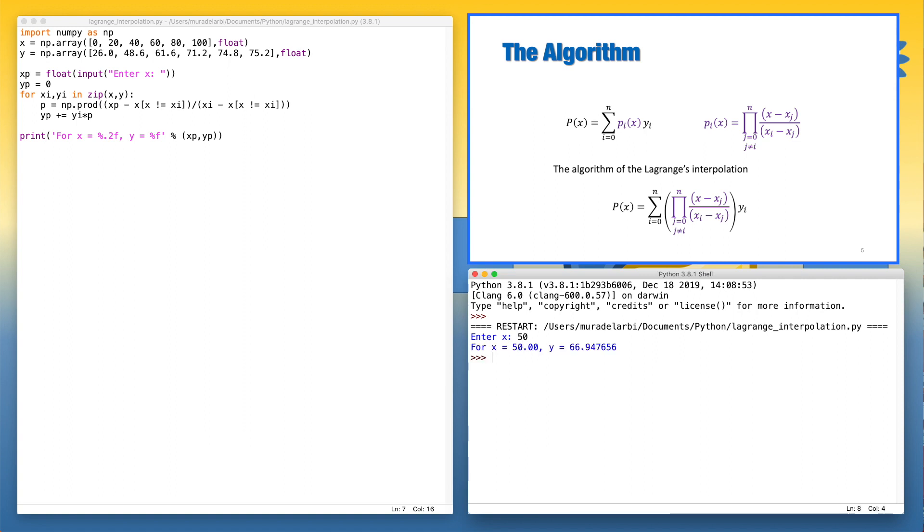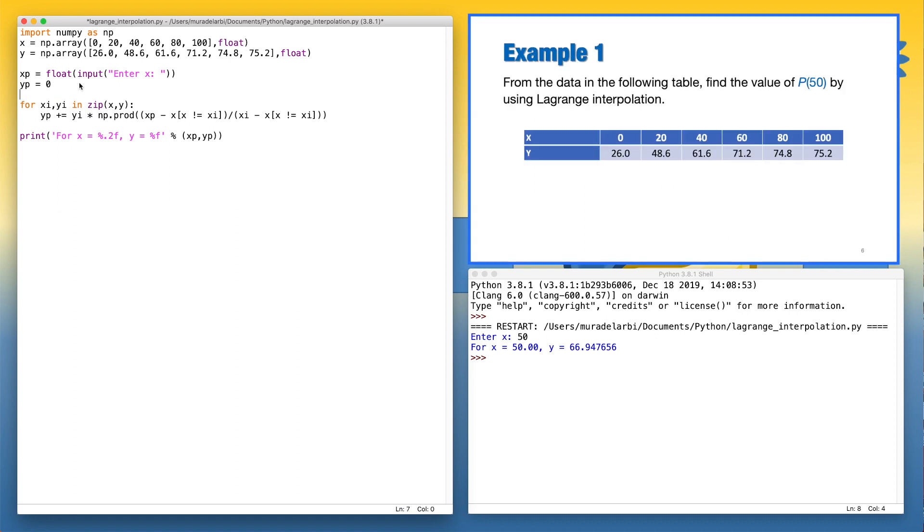So, as you see, we obtained the same value of y corresponding to x equals to 50. You notice that we have p has been repeated here, p and p. So, instead of two equations or two lines in the for loop, we can reduce it more to only one line: yp plus yi multiplied by this value. And then we remove. So, let's run the code again in order to test it. Again, let's use 50. The same value. Let's run the code for another one, 5. Let's say 60.